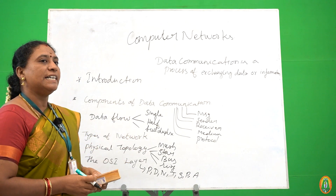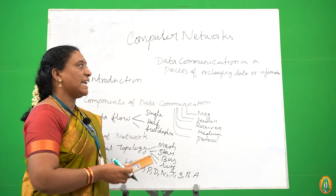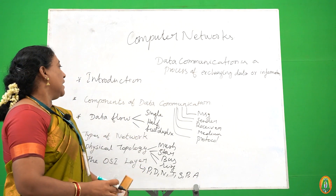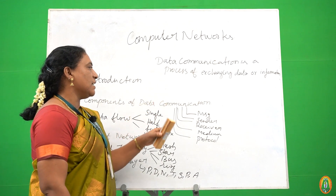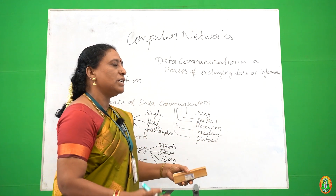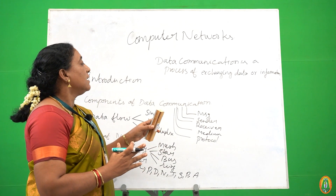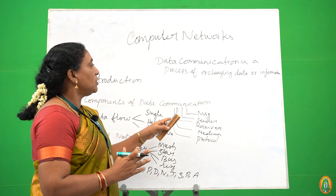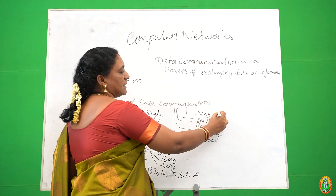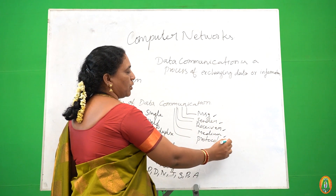What is computer networks? Data communication is a process of exchanging data or information. What are the components of data communication? Components are nothing but what are the elements used in data communication. The first ones are: message, sender, receiver, medium, and protocol.